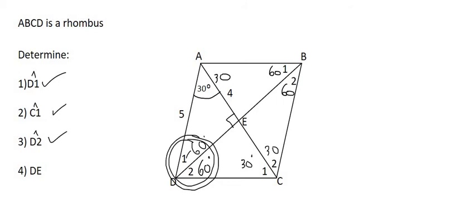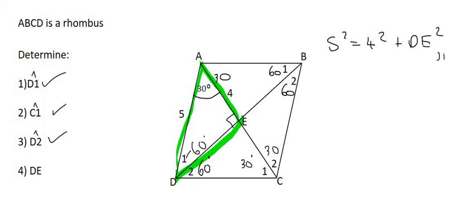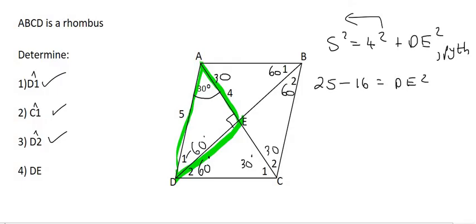Now they want us to find the length of DE. And so remember that the diagonals of a rhombus, well, they always bisect at 90 degrees. And so this triangle over here has a 90 degree in it. And so we can simply use Pythagoras, because we know that AD is 5, and we know that AE is 4. And so we can simply say that 5 squared is equal to 4 squared plus DE squared. And the reason for that is Pythagoras. Then you can solve for DE by taking the 4 squared over, and so we're going to end up with 25 minus 16 equals to DE squared. 25 minus 16 is 9. And then to get DE by itself, you would have to take the square root of 9, which is 3.